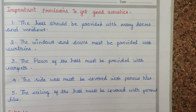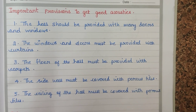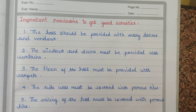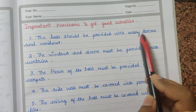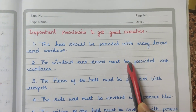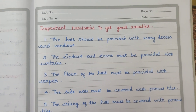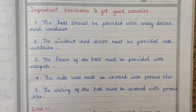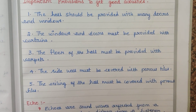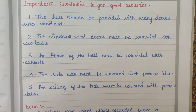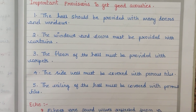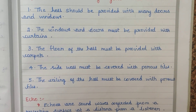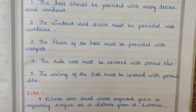The hall should be provided with many doors and windows. The windows and doors must be provided with curtains. The floor of the hall must be provided with carpets. The side walls must be covered with porous tiles.